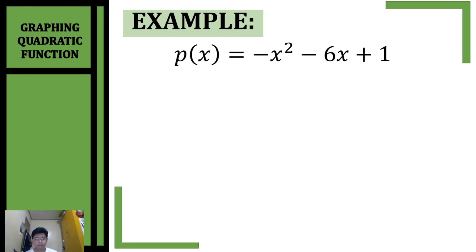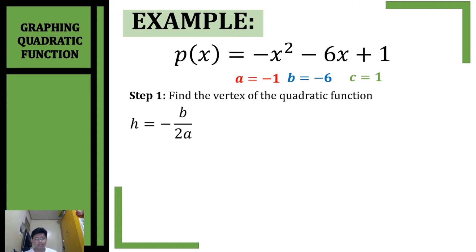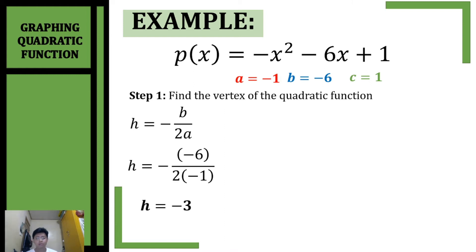Let's have another example. We're going to graph the quadratic function p(x) = -x² - 6x + 1. First step is to find the vertex. Since this is in standard form, let's get the values of a, b, and c. Our value of a is negative 1, b is negative 6, and c is 1. Using the formula h = negative b over 2a, substituting the values of a and b — negative negative 6 over 2 times negative 1 — simplifying, h is equal to negative 3.